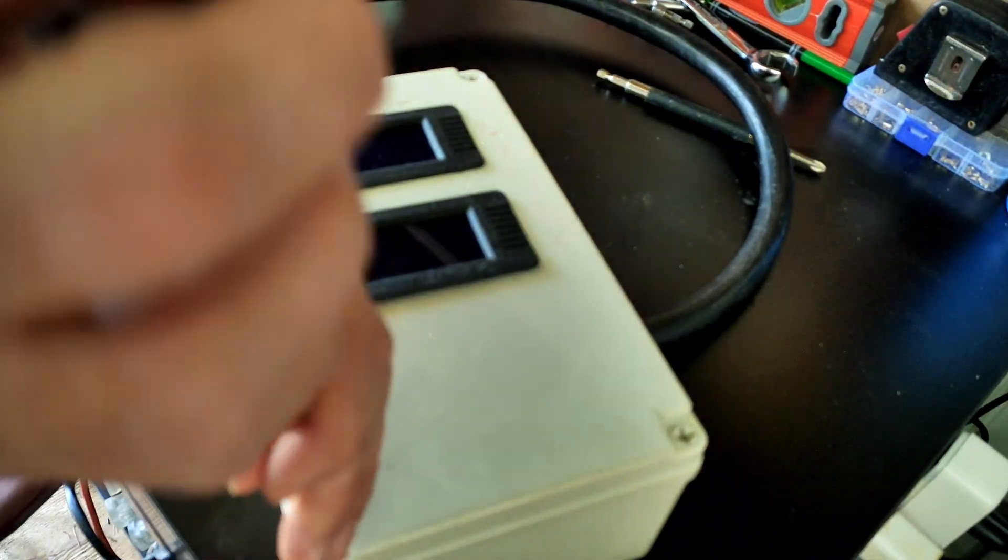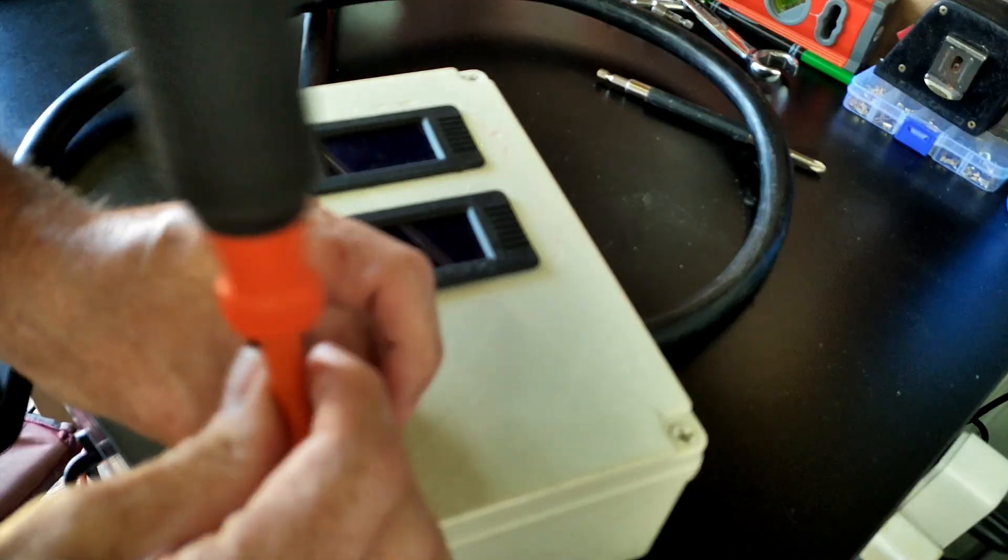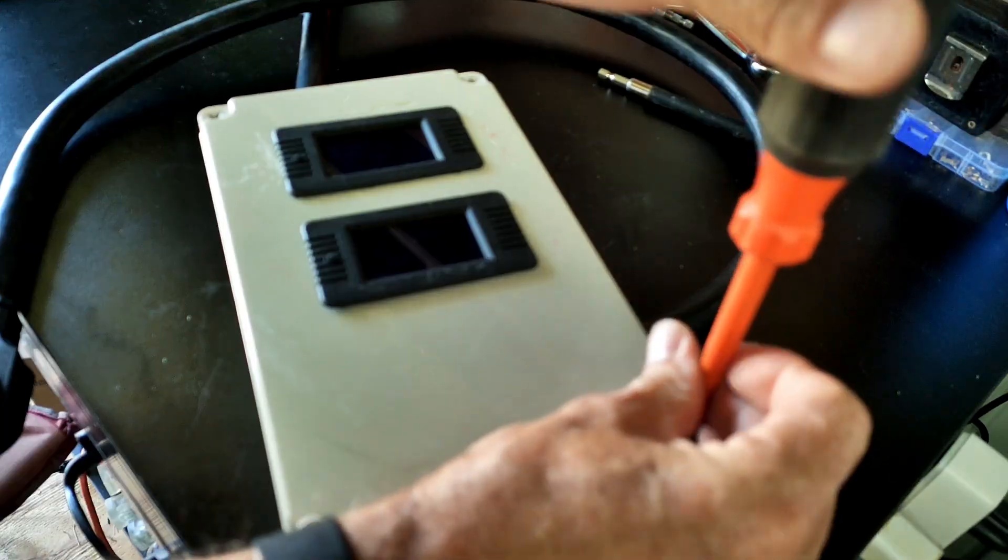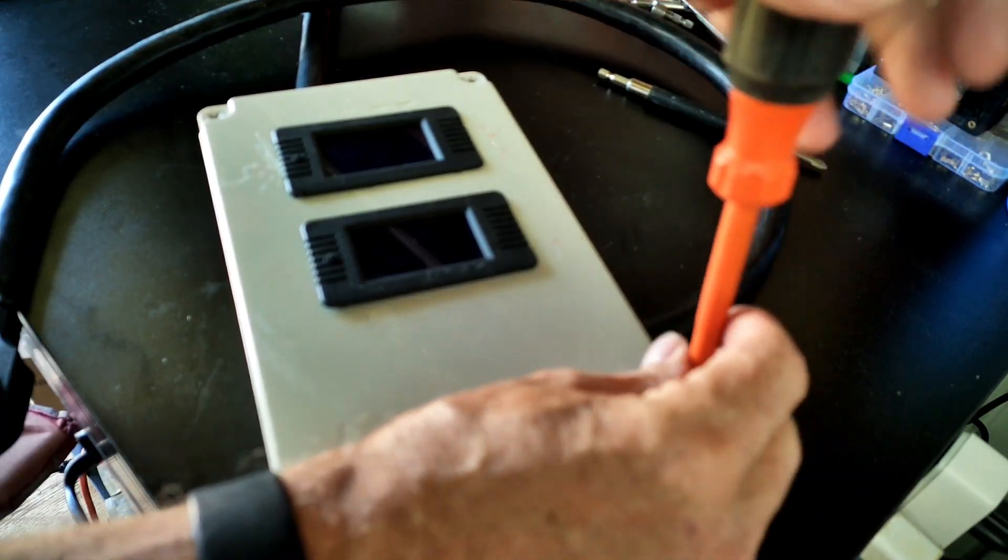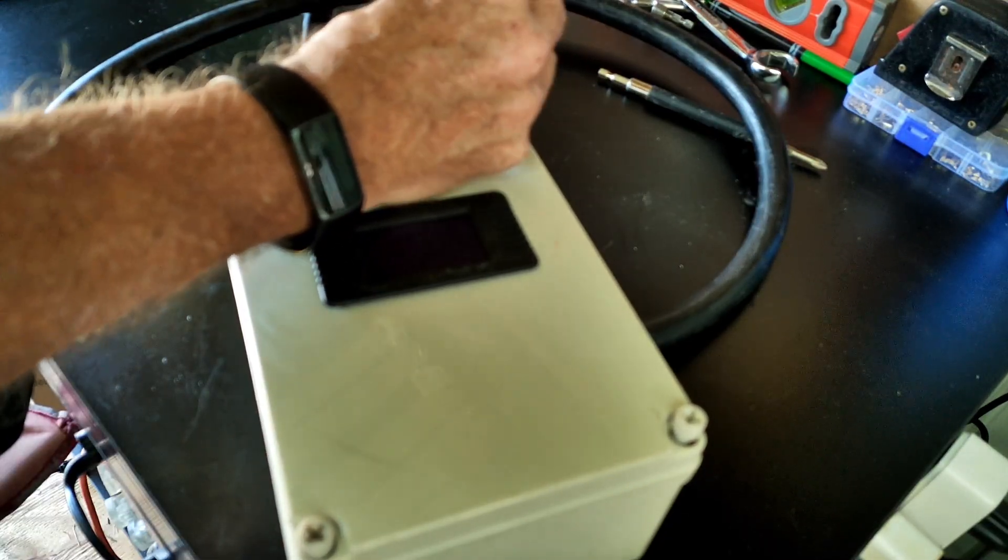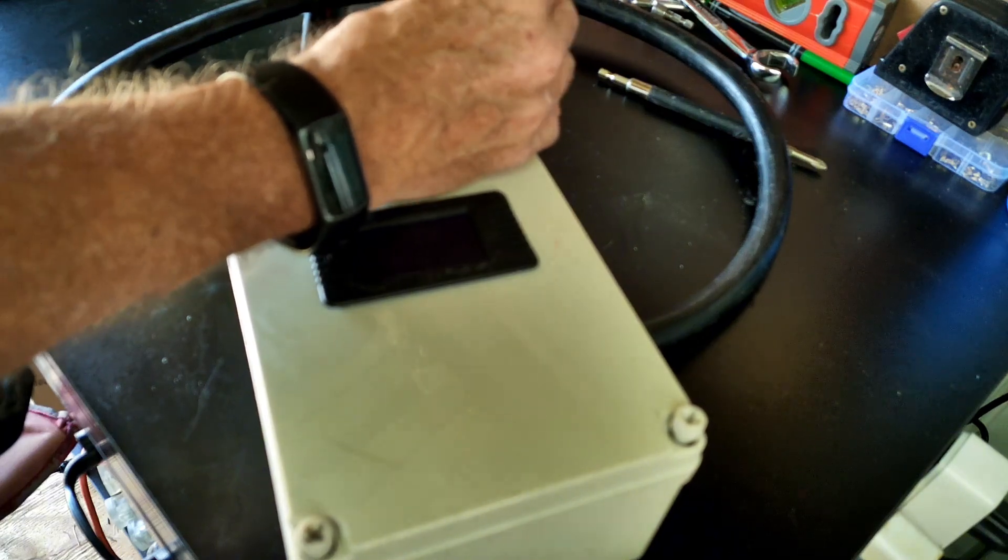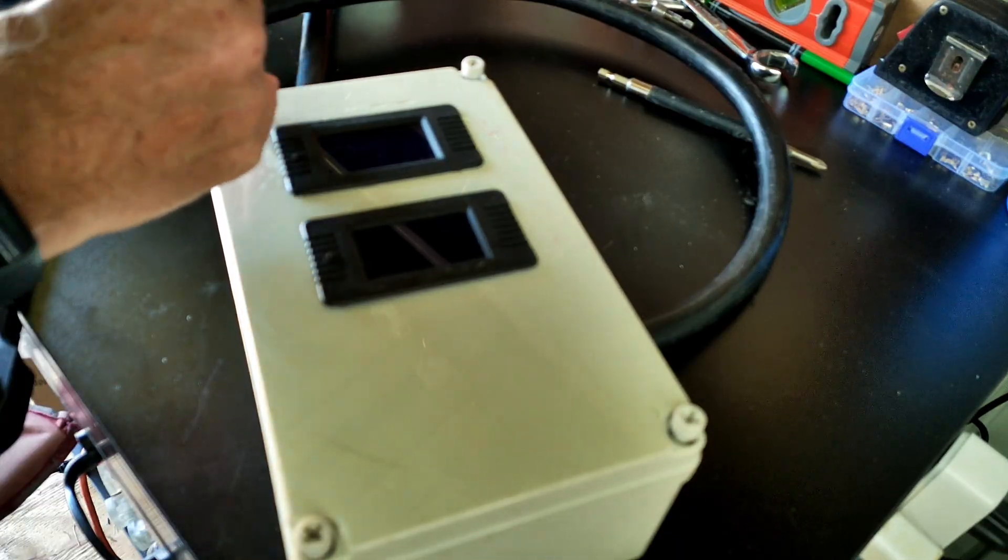We're going to unscrew the top of this case and this basically has four screws in it that run around a little rubber seam. Now this was originally an IP65 box. The seals that I made to connect all this stuff are not IP65 compliant. They do not hold water.